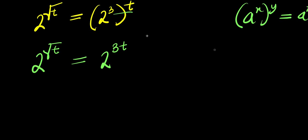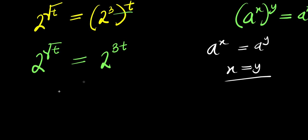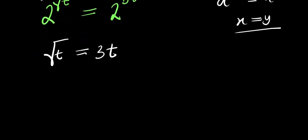Now we can apply this identity: a power x equals a power y means x equals y. So we can say square root of t equals 3t. The next step will be to eliminate the square root, which I can achieve by squaring both sides.